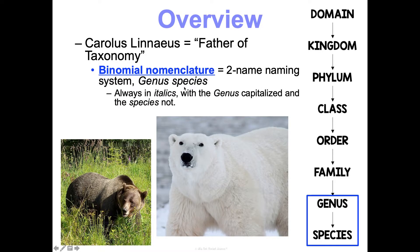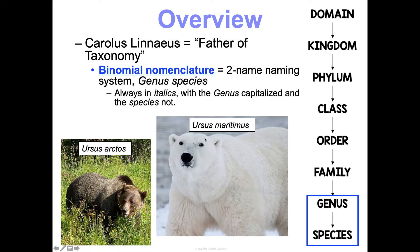These names are always written in italics. The genus name is always capitalized and species isn't. For example, the American brown bear is Ursus arctos versus Ursus maritimus, which is the polar bear. Notice that the genus is the same, so they're really closely related, but the species is different, so they are considered unique species.